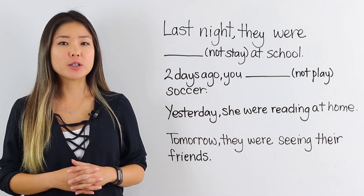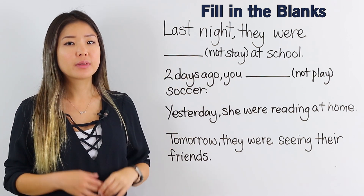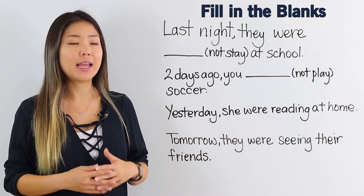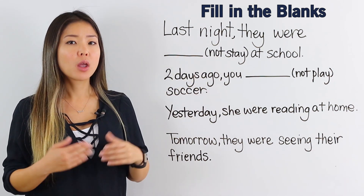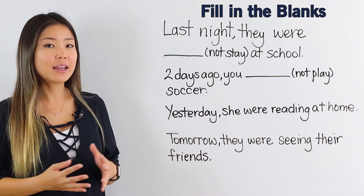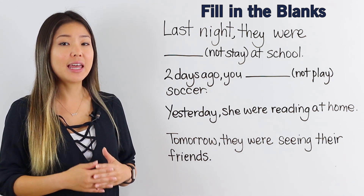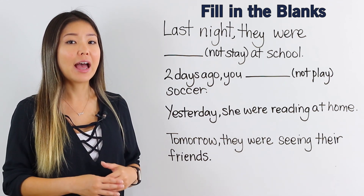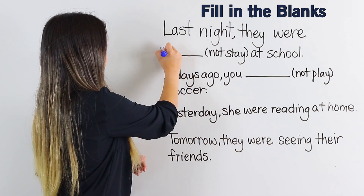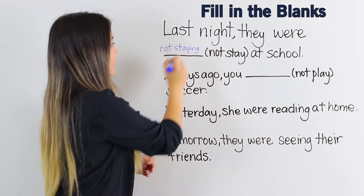Take a look at the first sentence: Last night, they were blank at school. I want you to try to fill in the blank with a negative for the verb stay. Remember, for the negative of the past continuous, all you have to do is put not and then verb –ing after the be verb. They were not staying at school.